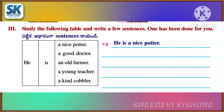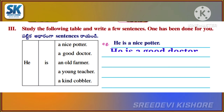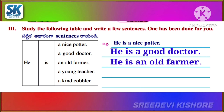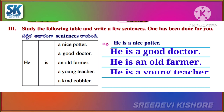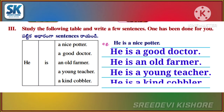Study the following table and write a few sentences. One has been done for you. Example: He's a nice potter. He's a good doctor. He's an old farmer. He's a young teacher. He's a kind cobbler.